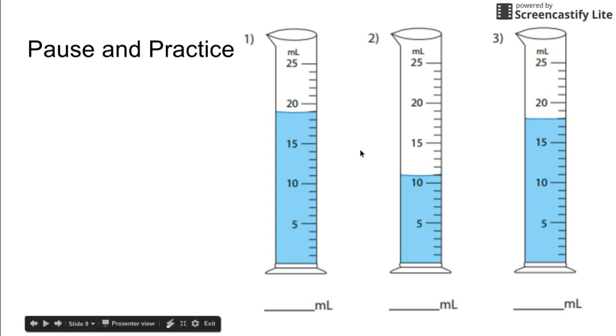All right, if you hopefully have paused it and have three answers written down, let's take a look at number one. Number one we can see is somewhere between 15 and 20. We can see that it's counting by ones: 15, 16, 17, 18, 19. And the bottom of the meniscus reads pretty close to 19 milliliters. So if you said 19 milliliters for this you're absolutely correct.